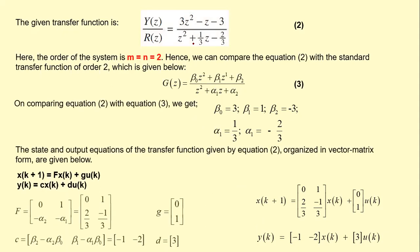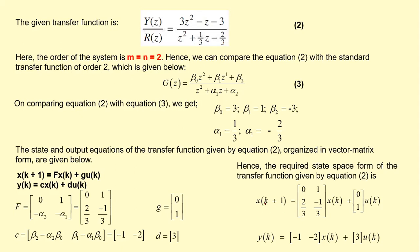In our previous lecture we already discussed this and obtained the state space model. We saw how we can use the formula and obtain the values of alphas and betas, then substitute these values into the matrices to obtain F, G, C, and D. Alphas and betas are obtained by comparing the given transfer function with the standard transfer function of similar order. Here we have a second order system, so we compare with the standard second order transfer function.